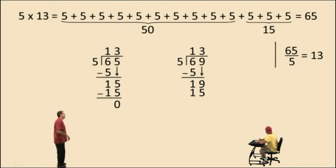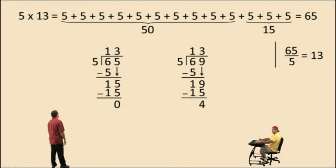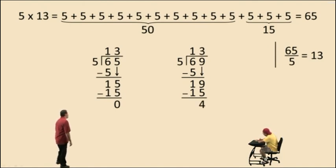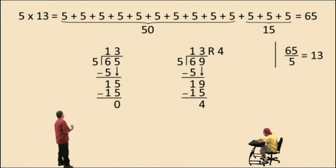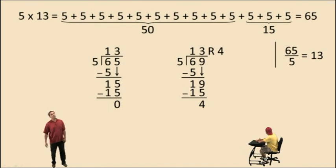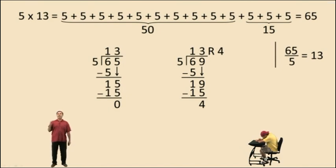And 19 subtract 15 is 4. So how many 5's go into 69? There are 13 whole 5's with a remainder of 4 units — that is your final answer. That's it for now. We'll see you again soon.